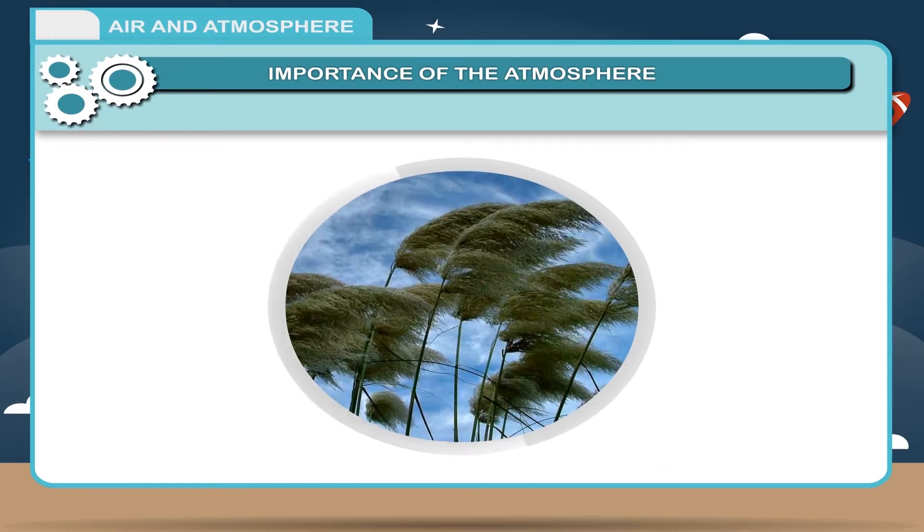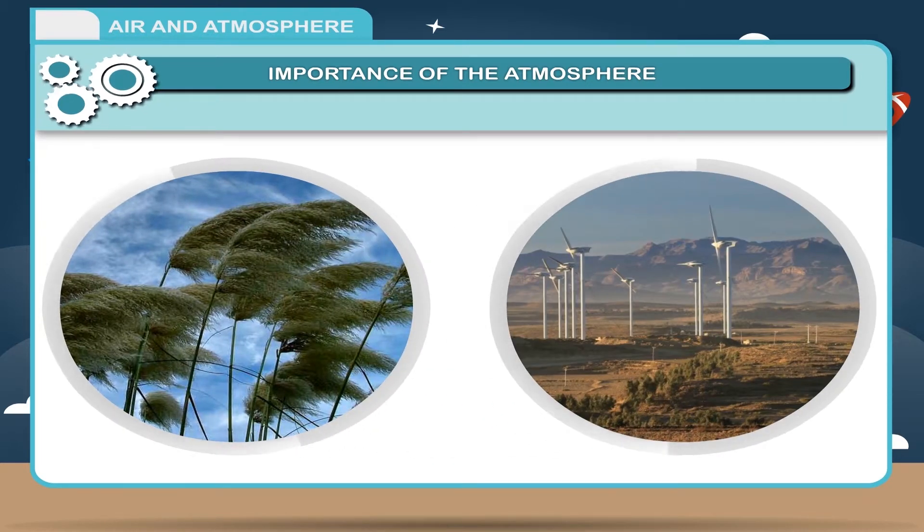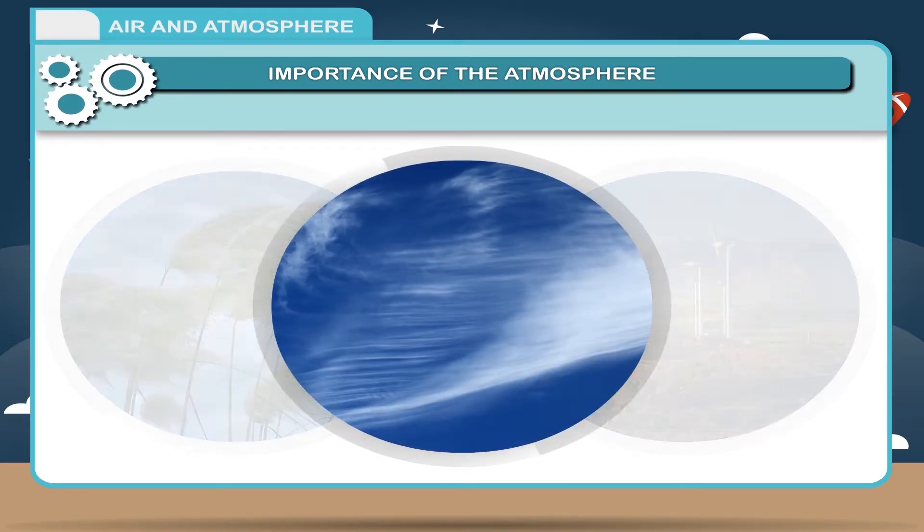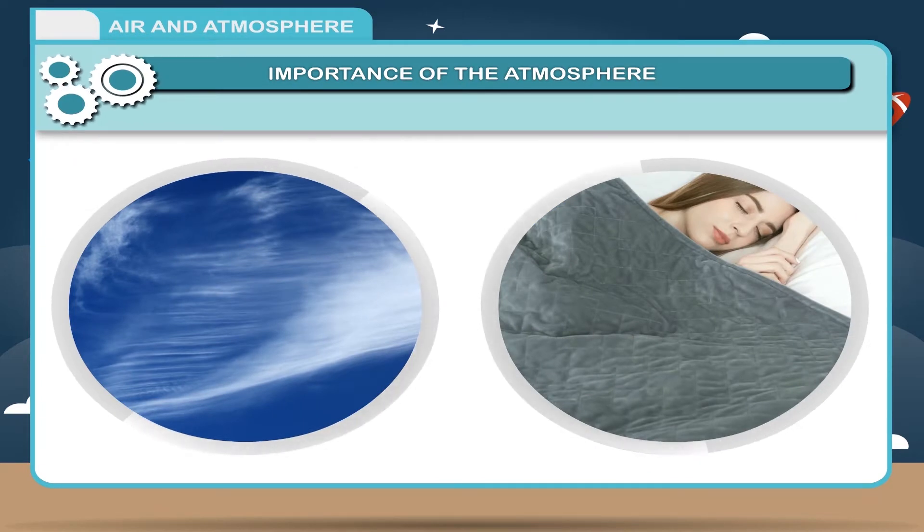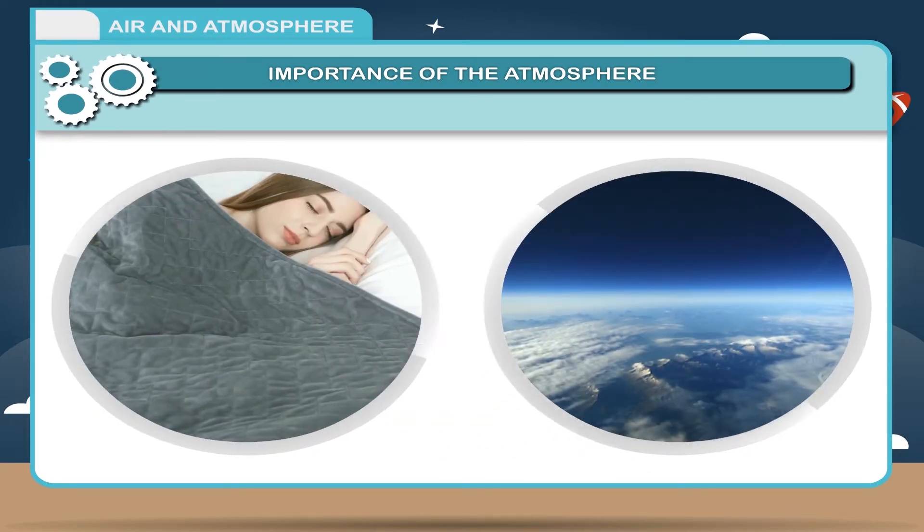Winnowing, a method of separating substances, is also based on wind. Electricity is generated from wind, which is moving air. Air surrounds the earth like a blanket. This blanket is called atmosphere.